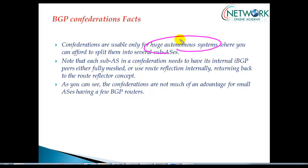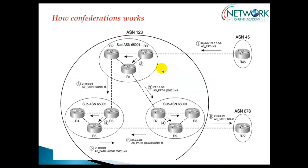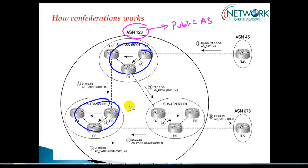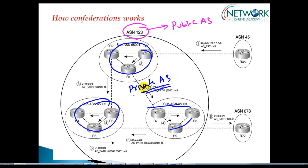Confederations is usable for huge autonomous system numbers, where you cannot afford to keep them all in one AS and split them into several sub-AS. The main AS number will mostly be your public autonomous system number. Whatever sub-AS you use inside must be your private AS numbers — you cannot use public AS numbers inside. So within the AS, you have to use private autonomous system numbers as the sub-AS numbers, which means you need a proper design and must select proper AS numbers.